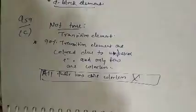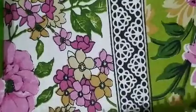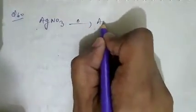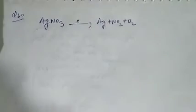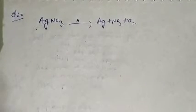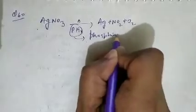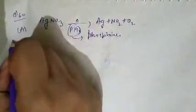Question number 60: for making silver from silver nitrate (AgNO3), which of the following is used? When AgNO3 is heated, it gives Ag plus NO2 plus O2. For making silver from AgNO3, we provide an atmosphere of phosphine gas. Question number 60, option A is correct.